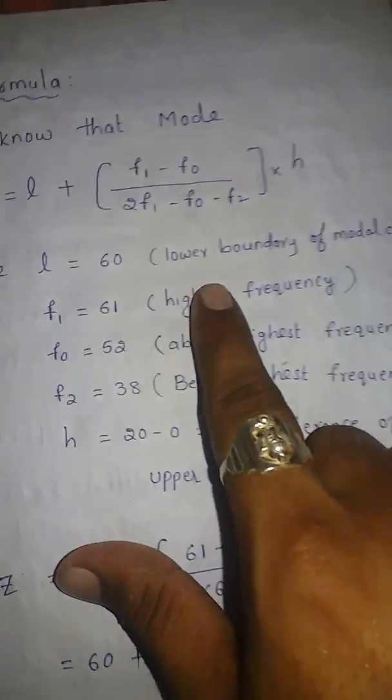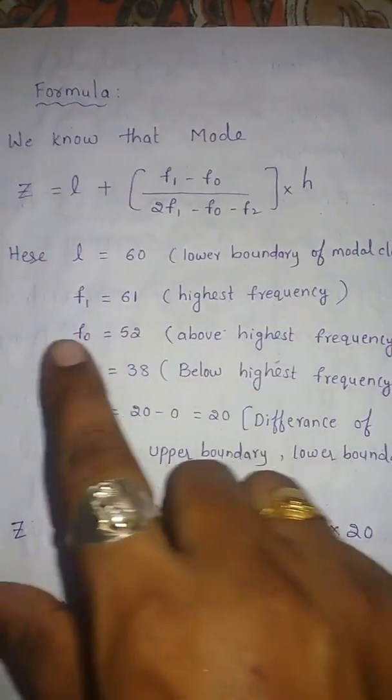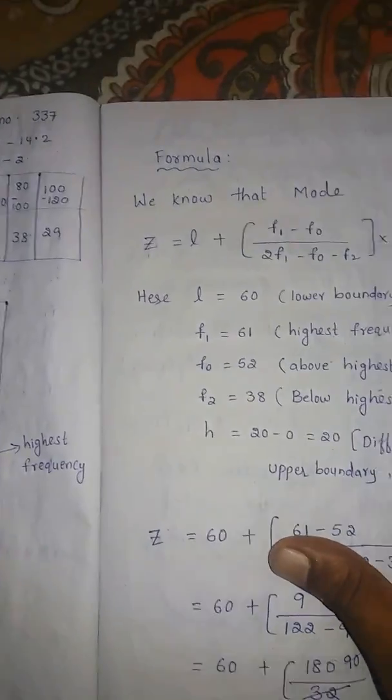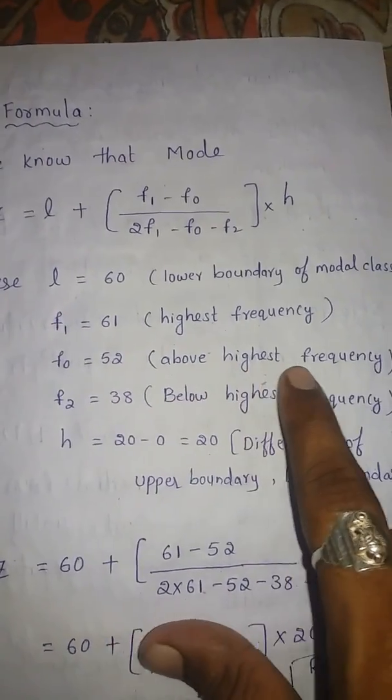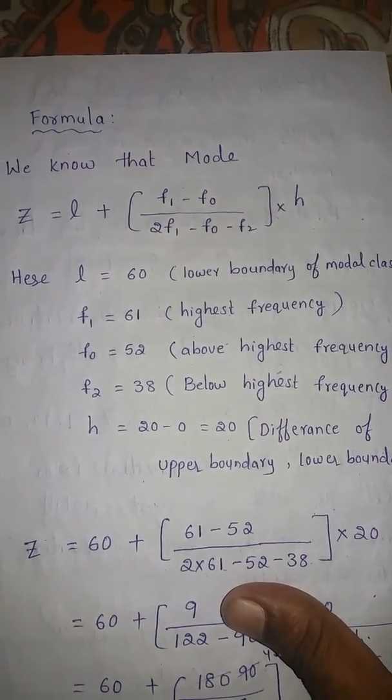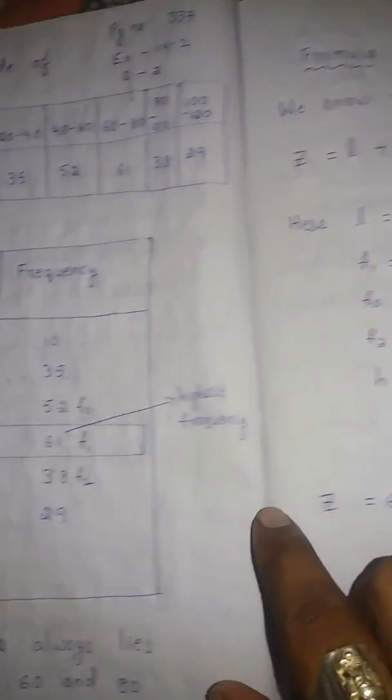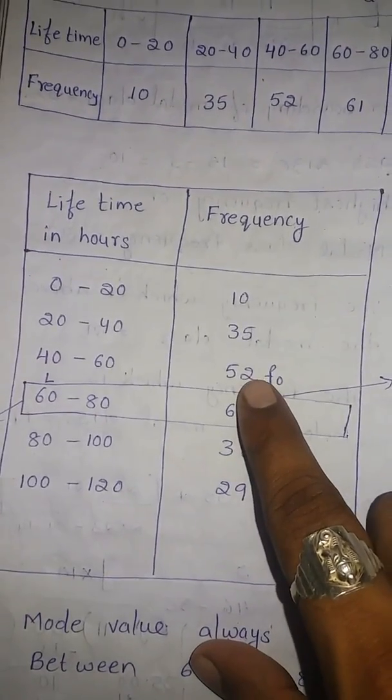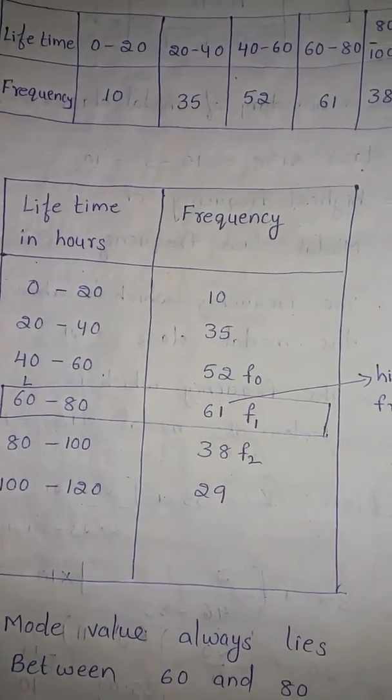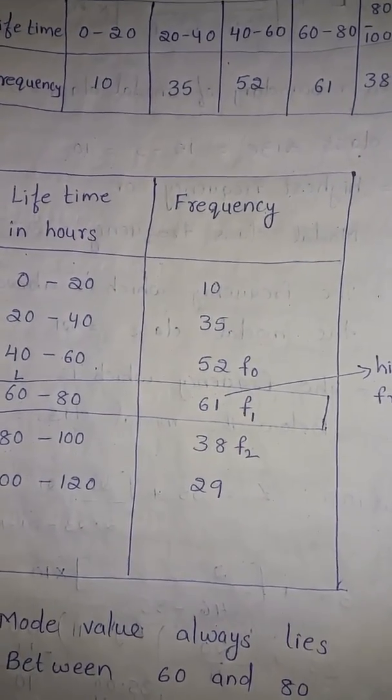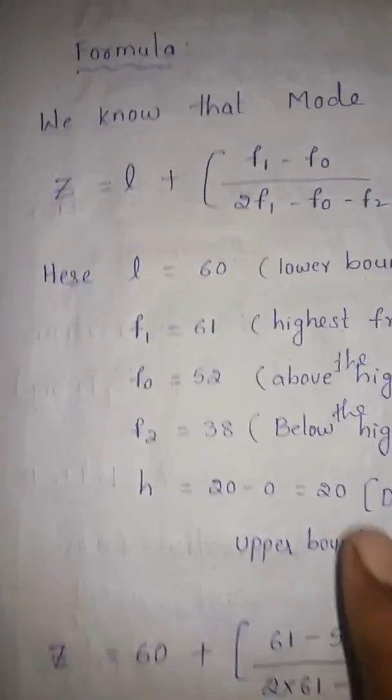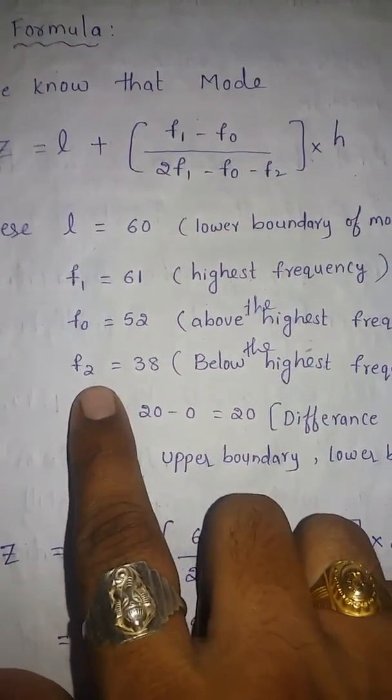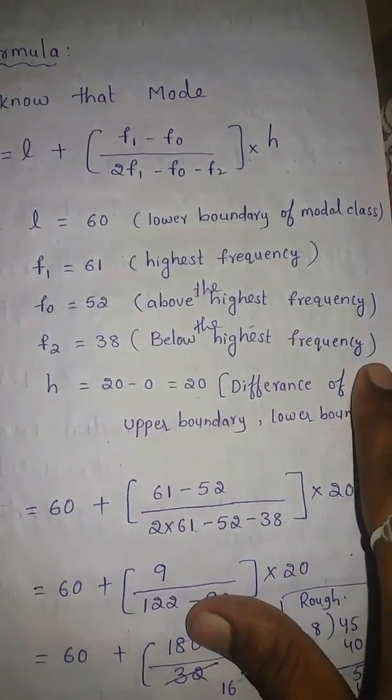Here L value is 60, lower boundary of a modal class. F1 is the highest frequency from the table, is 61. F0, above the highest frequency, above the highest frequency, 52 above the highest frequency is 52.